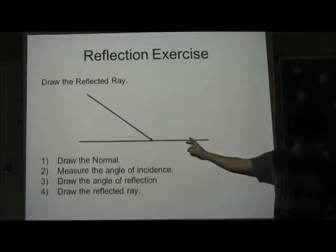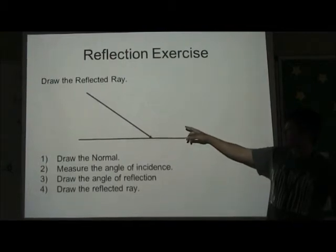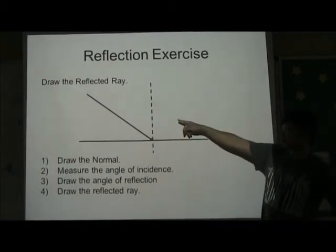The first step is to draw the normal, which is a dotted line that is at right angle to the reflecting surface, as shown.